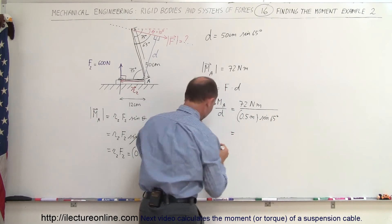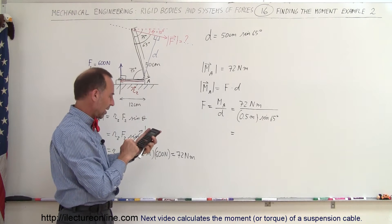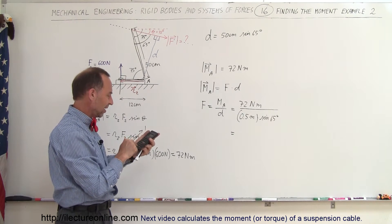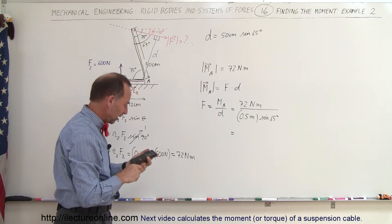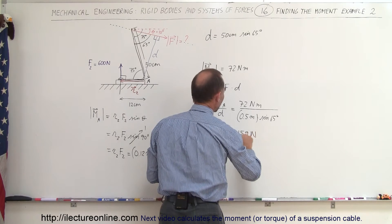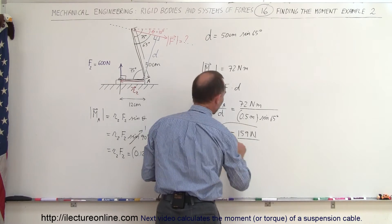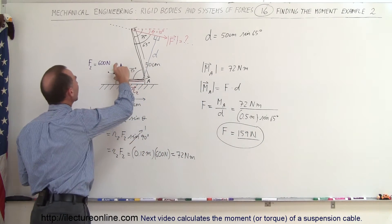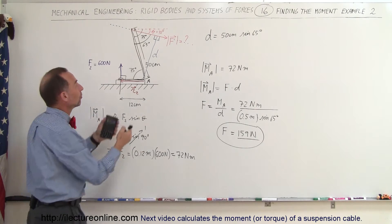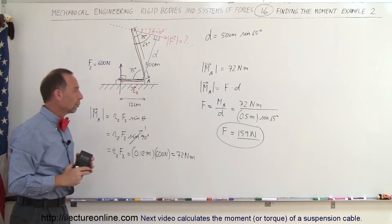So the force equals 72 Newton meters divided by D, which is 0.5 meters times the sine of 65 degrees. That gives us 72 divided by 0.5 times sine of 65 degrees, which equals 159 Newtons of force required — which is reasonable, and that's of course why we use crowbars. If you apply a force of 159 Newtons, you will remove the nail that requires 600 Newtons, because you use a much bigger moment arm.